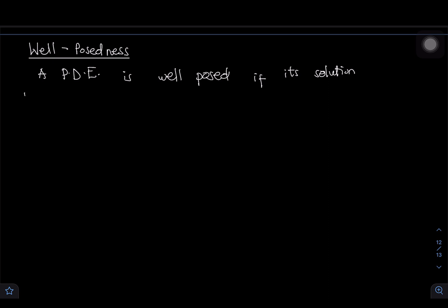The first condition is that the solution must exist. Secondly, the solution has to be unique. And the last one is that the solution must be stable. For existence, it is very easy to understand — the solution must exist.